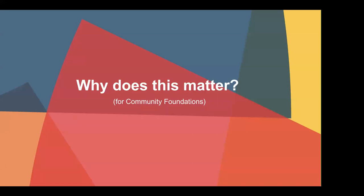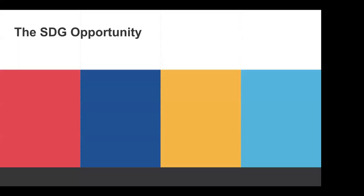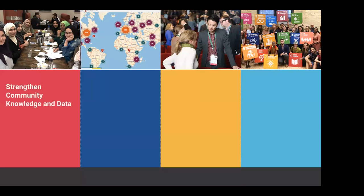Why does any of this matter? I'll speak to this with a community foundation lens, though many points are relevant regardless of where you work in civil society. The SDGs are really effective at helping to strengthen community knowledge and data work. Much of the work of community foundations is rooted in community knowledge and data gathered through initiatives like Vital Signs. The SDGs allow that work to plug into a bigger picture — tracking goals in a comparative way across communities, and feeding data into a national and international picture of how we're doing.